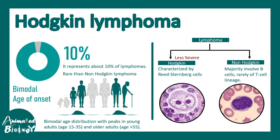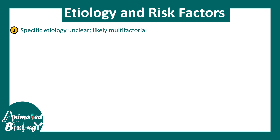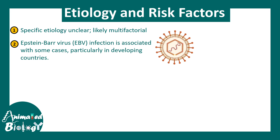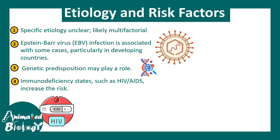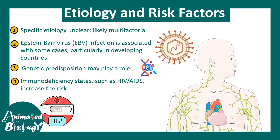Hodgkin's lymphoma is less severe compared to non-Hodgkin's. The specific etiology is unclear but it could be multifactorial. One of the factors is Epstein-Barr virus infection. There could also be genetic predisposition which can play a role. Immunodeficiency states such as HIV and AIDS can also increase the risk. This particular lymphoma is kind of trackable and predictable.